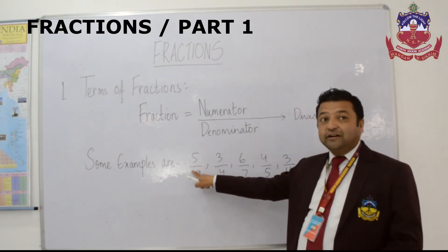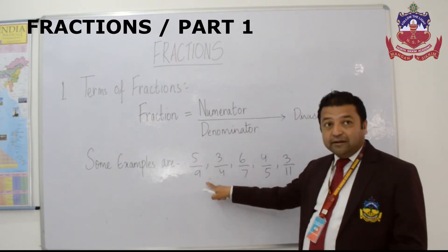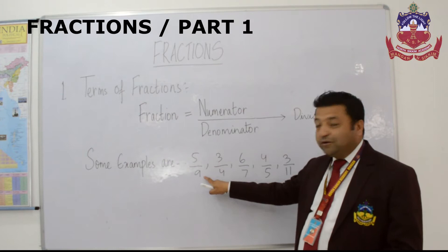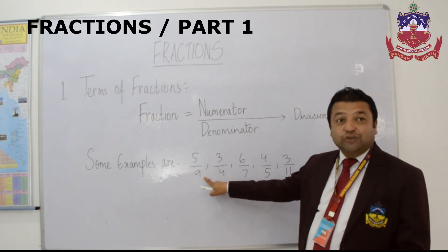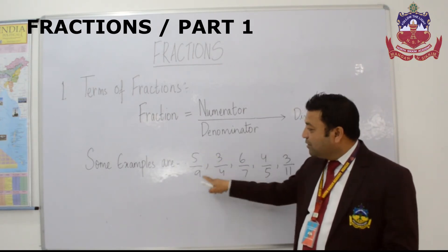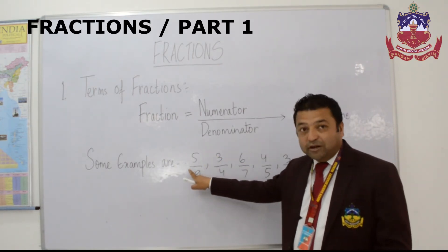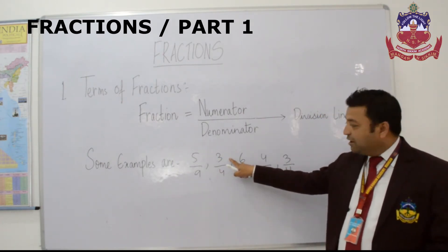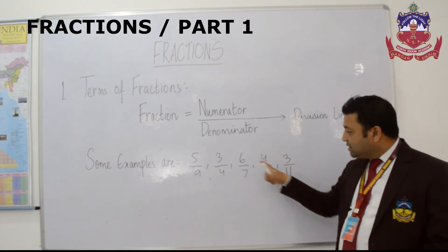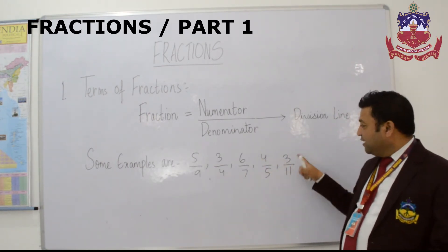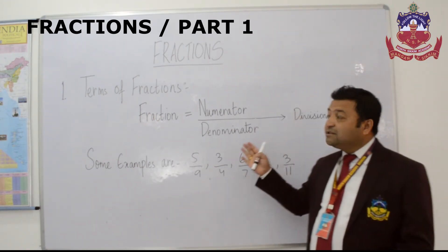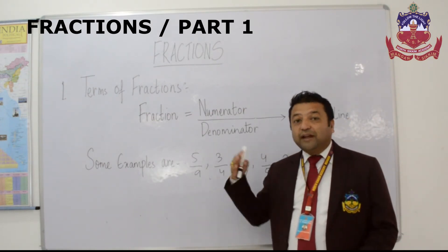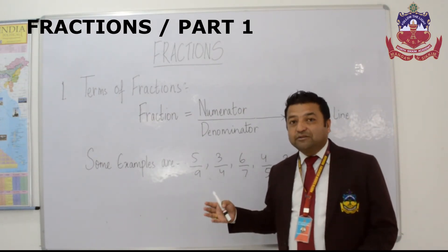With some examples, I have shown you fractions here. 5 by 9 — the upper number is the numerator and the lower number is the denominator. These two numbers are separated by the division line. Examples given here also: 3 by 4, 6 by 7, 4 by 5, and 3 by 11. These are the terms of fractions.